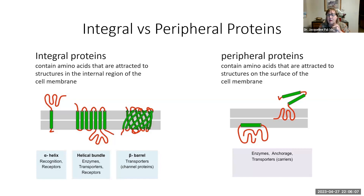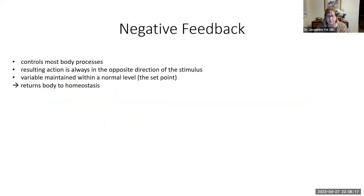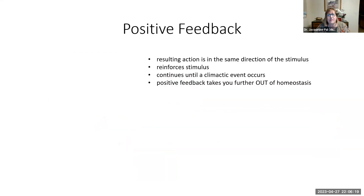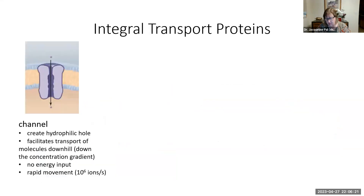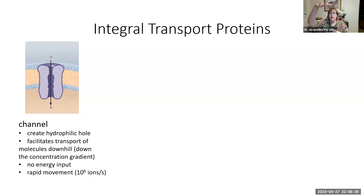We're going to focus on some of the most common integral proteins so you can understand what they do. First, let's look at the three types of integral proteins that do transportation. The first is called a channel, and a channel is basically a hole that goes all the way from the extracellular matrix to the cytosol on the inside.